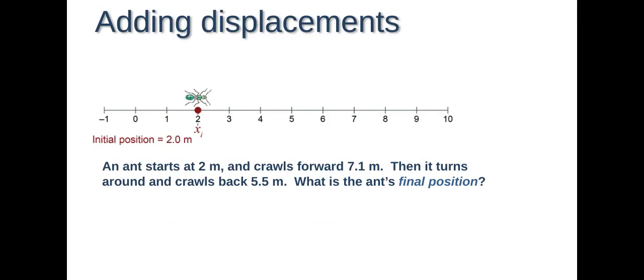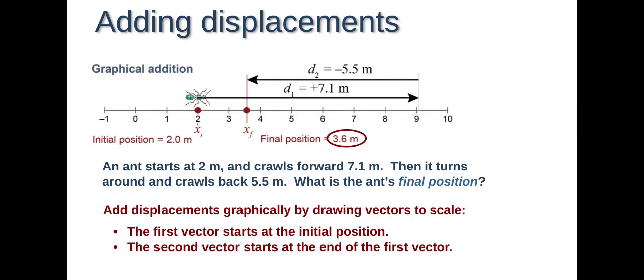Adding displacements. Let's do a practice problem to show how we add displacements. The initial position is 2.0 meters. An ant starts at 2 meters and crawls forward 7.1 meters, then turns around and crawls back 5.5 meters. What is the ant's final position? The first thing you need to determine is what values are positive and which ones are negative. Crawls forward is positive. So we have 2 meters plus 7.1 meters, then turns around and crawls back, we'll give that a negative value. So minus 5.5 meters. You calculate this and do basic math with that. My final answer after calculating is 3.6 meters.